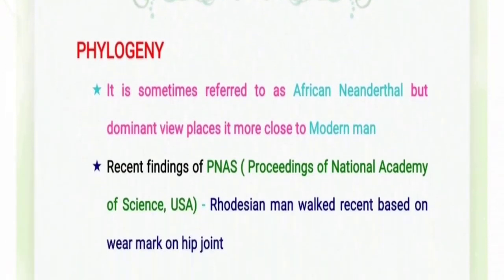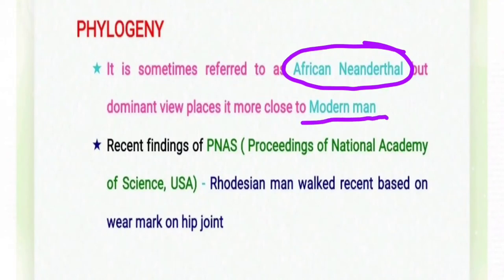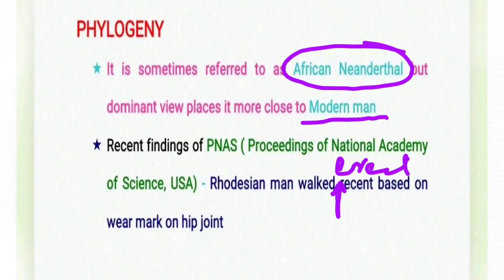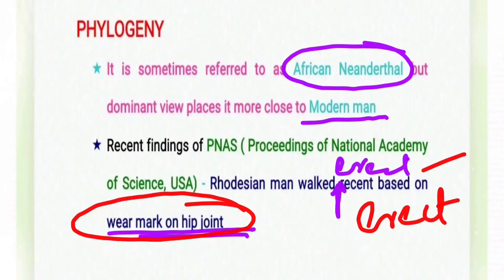In phylogeny, the Rhodesian Man is sometimes referred to as the African Neanderthal, but the dominant view places it closer to modern man. According to recent findings in the Proceedings of the National Academy of Sciences USA, the Rhodesian Man walked erectly, based on wear marks on the hip joints. These wear marks indicate that the Rhodesian Man's posture was erect.